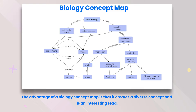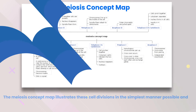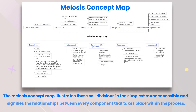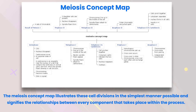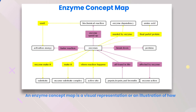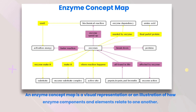Meiosis concept map: the meiosis concept map illustrates cell divisions in the simplest manner possible and signifies the relationships between every component that takes place within the process. Enzyme concept map: an enzyme concept map is a visual representation or illustration of how enzyme components and elements relate to one another.